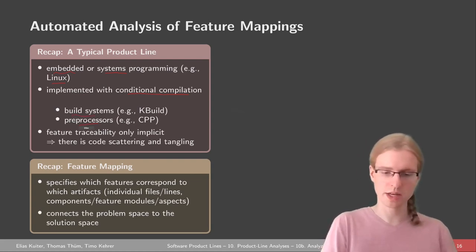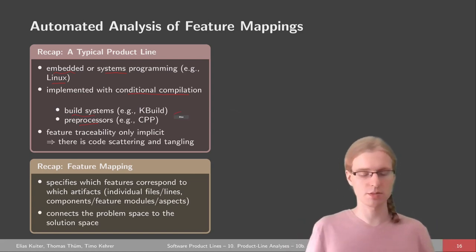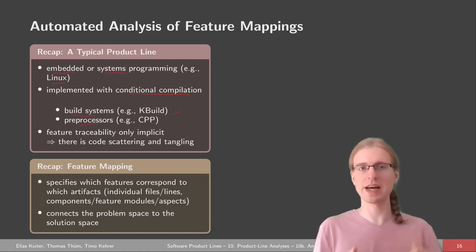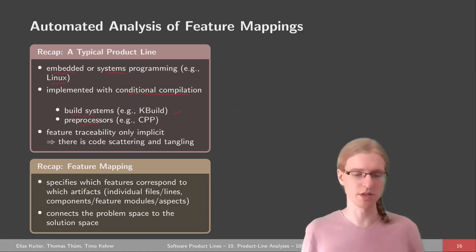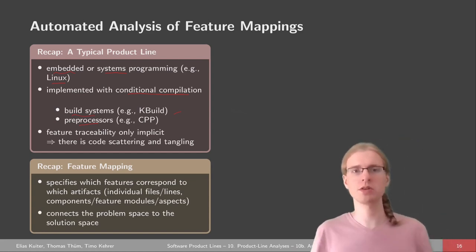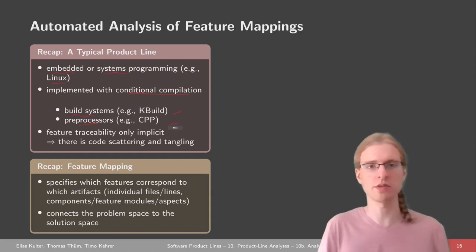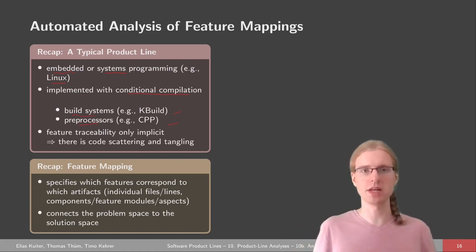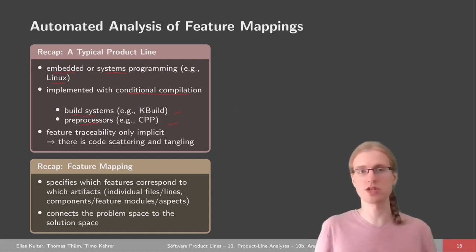With a build system, we can use, for example, kbuild, which is a specific kind of make file. We can try to annotate each file in our implementation and say which files are included for which features and which are excluded. We can do this at a coarse granularity, but we can also have a fine granularity by using, for example, the C preprocessor, which allows us to annotate each line in our files.